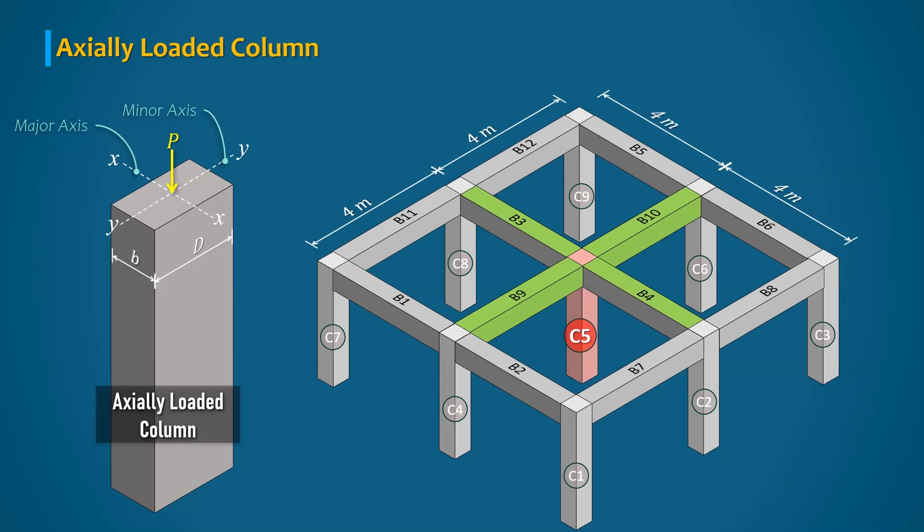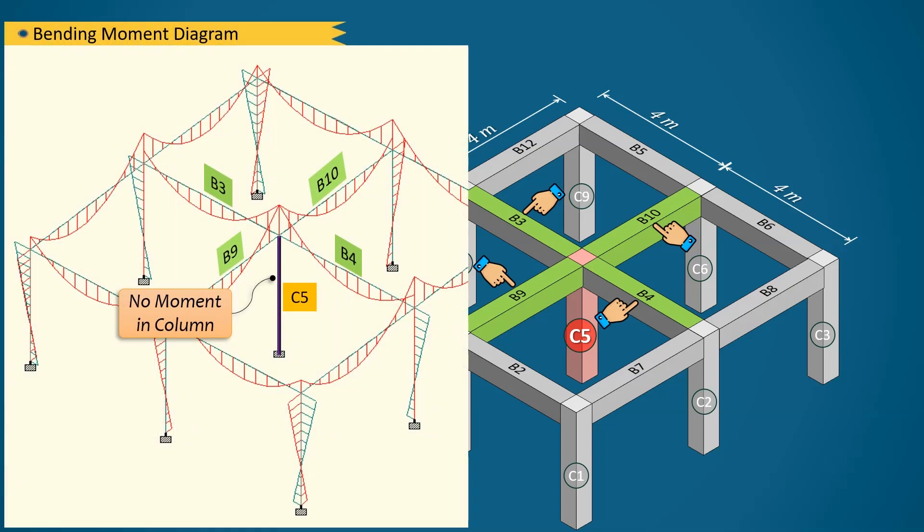In this building frame, consider an interior column C5 which is supporting beam B3, B4, B9, and B10. As these four beams are of same size and span and carrying same load from floor slab, there will be no unbalanced moment on both sides of the column. Therefore, the column C5 can be categorized as axially loaded column.